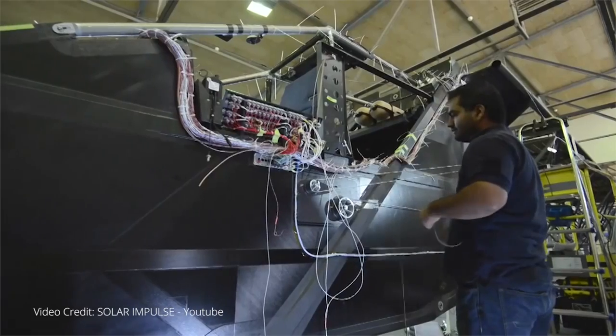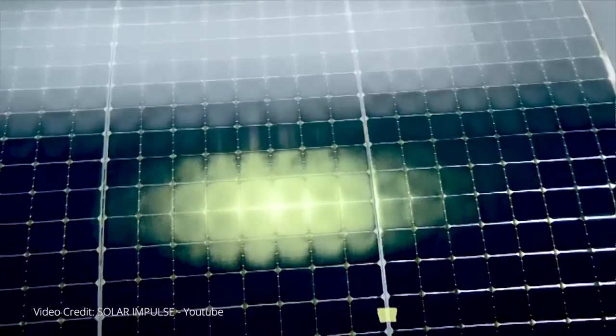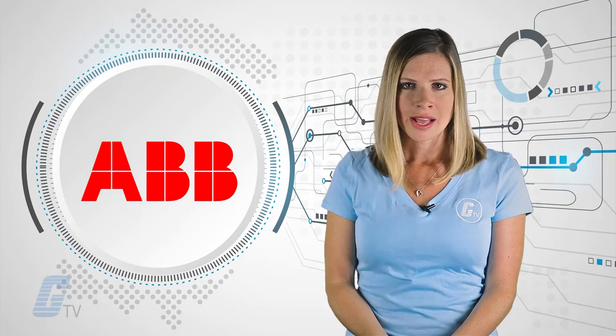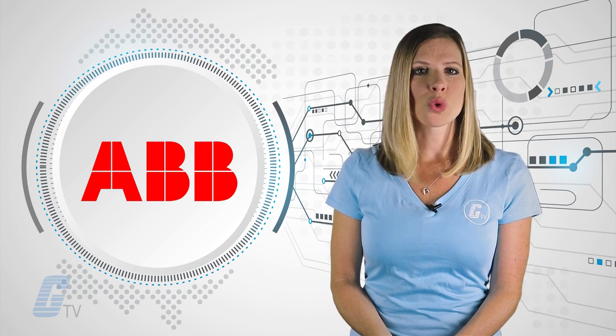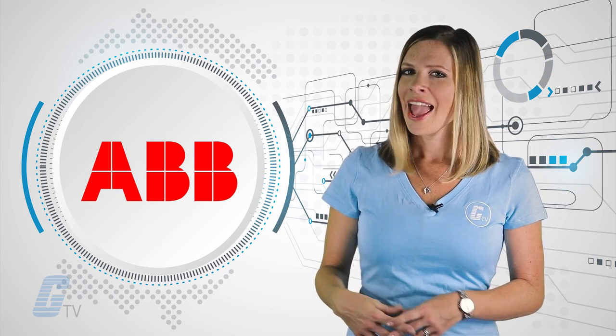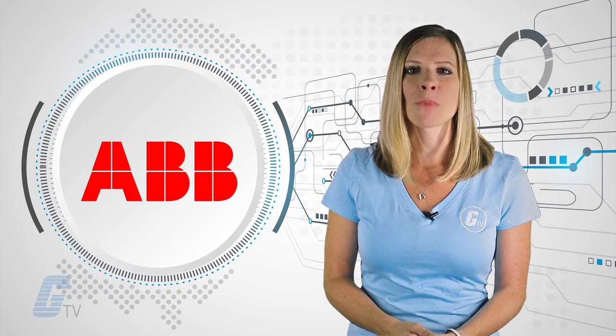ABB updated electrical devices on the plane to ensure the solar panels produced as much electrical energy as possible. They worked on the cockpit battery to ensure the pilot control systems were reliable, and they helped manage the electrical system for Solar Impulse's mobile hangar.